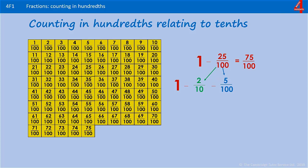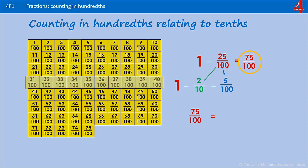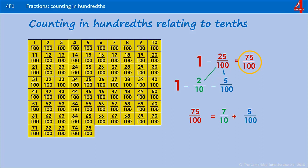If that made sense to you, have a go at this: we have 75 hundredths left — express 75 hundredths in tenths and hundredths. Pause the video and have a go. In 75 hundredths, how many tenths are there? How many whole rows of 10? One, two, three, four, five, six, seven — we have seven tenths. And then how many hundredths? One, two, three, four, five — so that's seven tenths and five hundredths, which is the same as 75 hundredths.